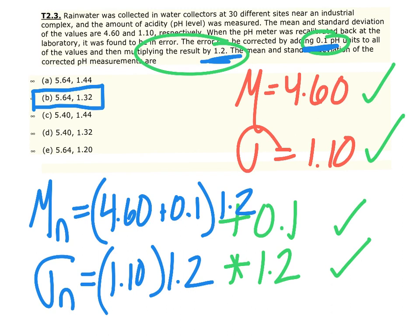This is a really important concept to remember because we use this from now all the way to the end of the book into chapter 12. Measures of center are impacted by add, subtract, multiply, and divide. Standard deviations, as a measure of spread, are only affected by multiplication and division.